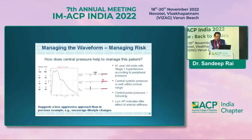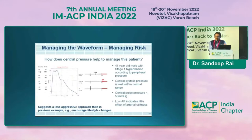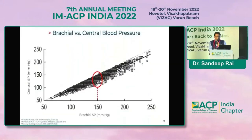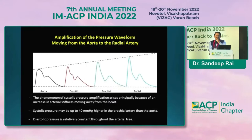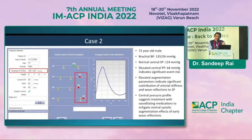Case 1: A 41-year-old male with stage-1 hypertension by peripheral blood pressure. However, measuring his central systolic pressure shows it is well within range — central pulse pressure is less than 50. Although he has slightly high peripheral blood pressure, only lifestyle changes are suggested at this stage. Note that brachial and central correlate well in most cases, but about 30% of patients have an acceptable peripheral BP while central may be high — the difference can be up to 40 mmHg.